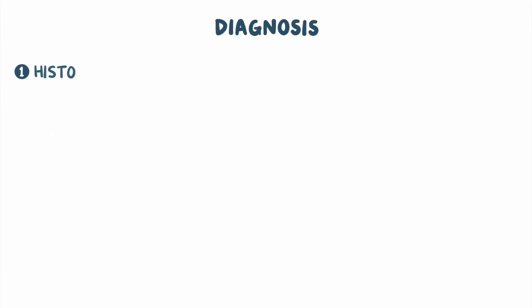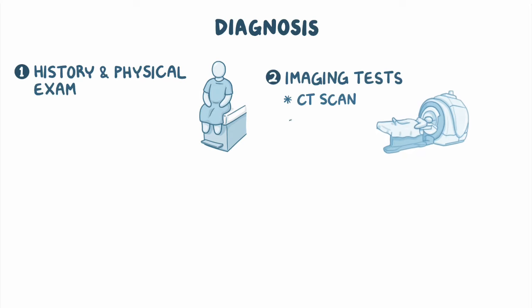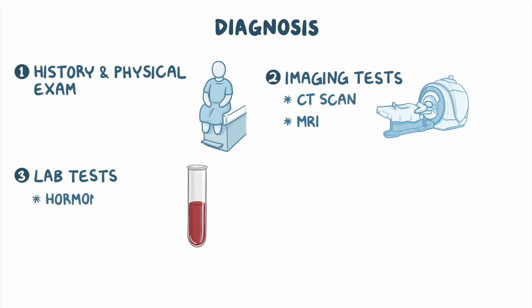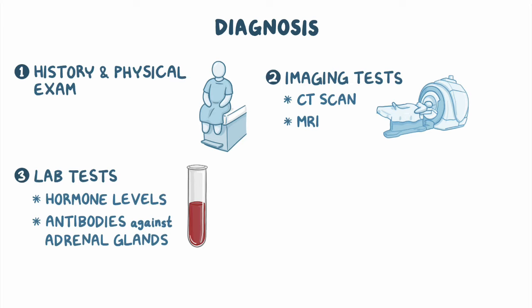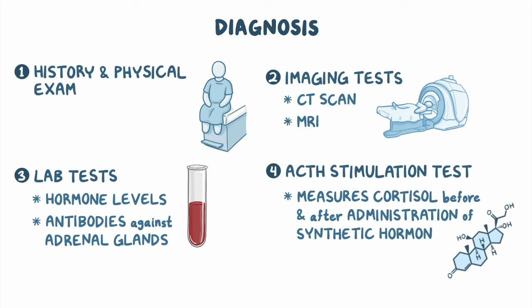Diagnosis of adrenal insufficiency starts with a history and physical examination. Imaging tests, like a CT scan or MRI, can help visualize the adrenal glands or pituitary gland to identify structural abnormalities. Laboratory tests may also be done and include hormone levels and antibodies against the adrenal glands. Diagnosis can be confirmed with an ACTH stimulation test, which measures levels of cortisol before and after administration of a synthetic hormone.